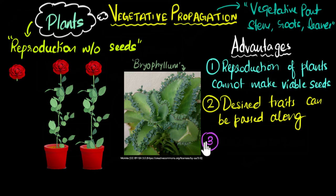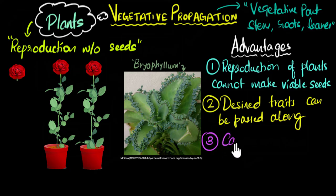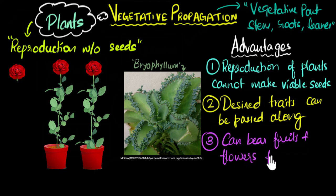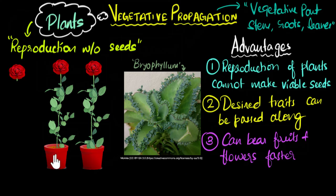The third advantage is that when you vegetatively propagate, there's a good chance the plants can bear fruits and flowers earlier — faster compared to when using seeds. This is because you're not using seeds, so there is no germination stage — all that germination time is skipped. It's kind of like missing childhood and directly growing into an adult.